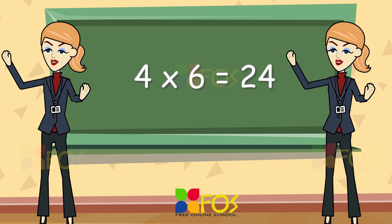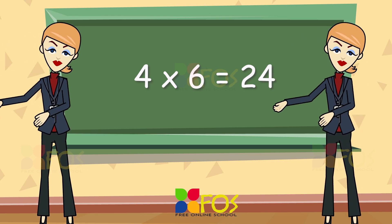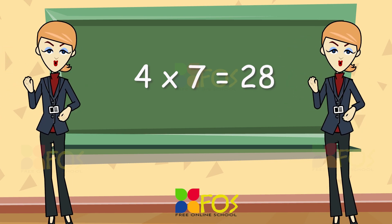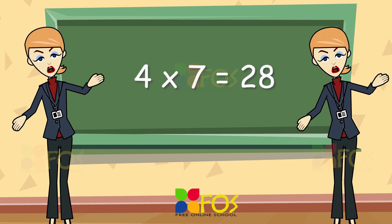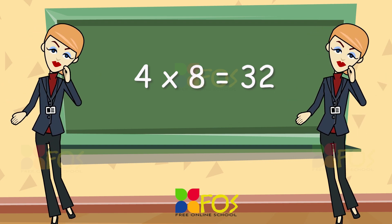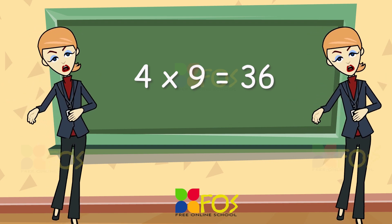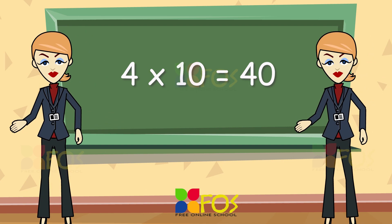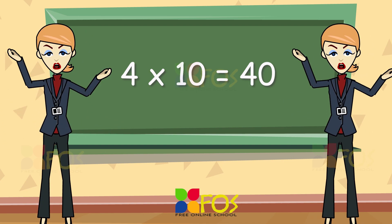Four sixes are twenty-four. Four sevens are twenty-eight. Four eights are thirty-two. Four nines are thirty-six. Four tens are forty.